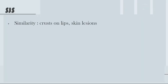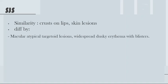The mucous membrane pemphigoid presents with crusting of the lips and skin lesions. How to differentiate? Differentiate by macular atypical targetoid lesions versus widespread dusky erythema with blistering. Stevens-Johnson syndrome usually begins on the trunk, whereas erythema multiforme starts on the hands.